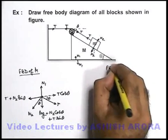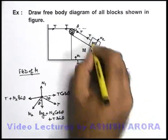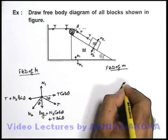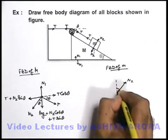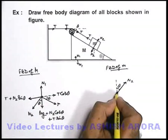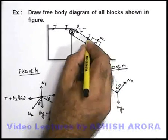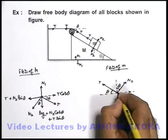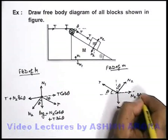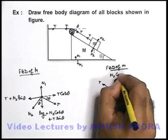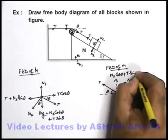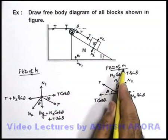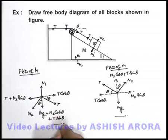Similarly, we can draw the free body diagram of block small m. In this situation, the block experiences mg in the downward direction. Normal reaction N2 acts on it in a direction making angle theta with the vertical. It also experiences tension in the direction along the string, which is at angle theta with the horizontal. Resolving forces: in the horizontal direction it experiences N2 sin theta and T cos theta; in the vertical direction it experiences N2 cos theta and T sin theta. So these are the forces acting on block small m, and this is the free body diagram of small m. And this is the free body diagram of capital M.